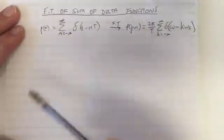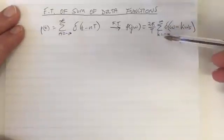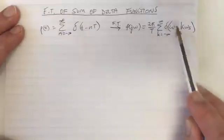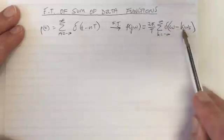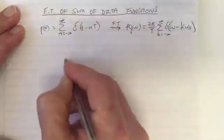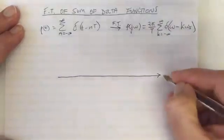So this function here is going to have all of these elements from k equals minus infinity to infinity. Each one of those elements is a different delta function shifted by a different amount. So if we picked little k equals zero, we've got delta omega.